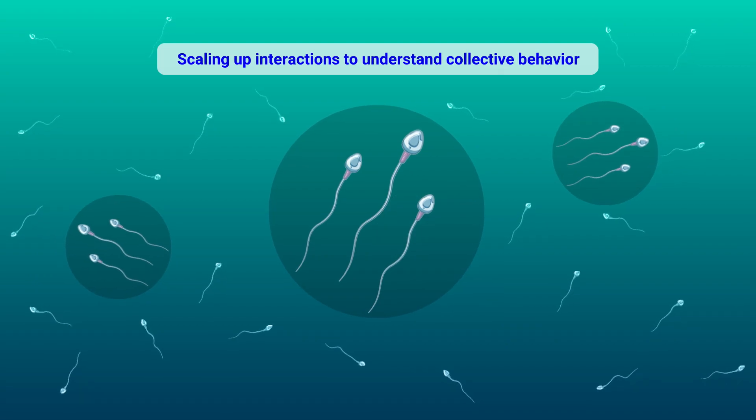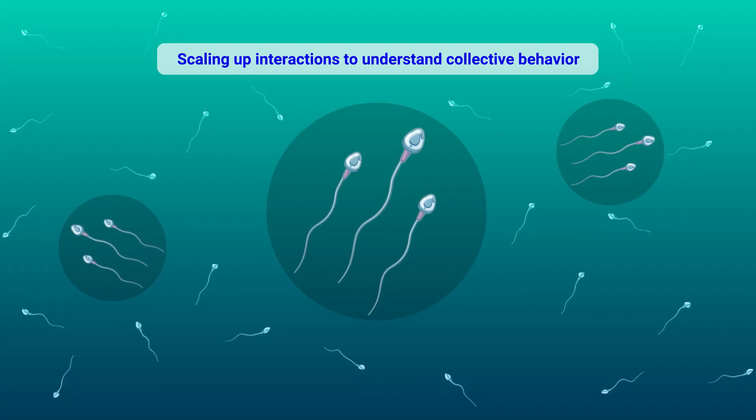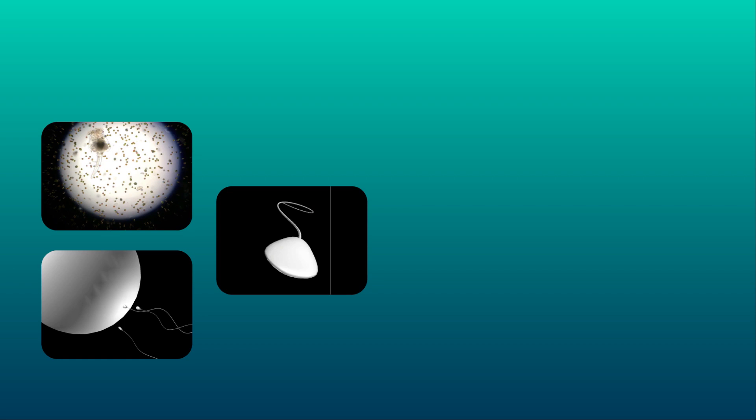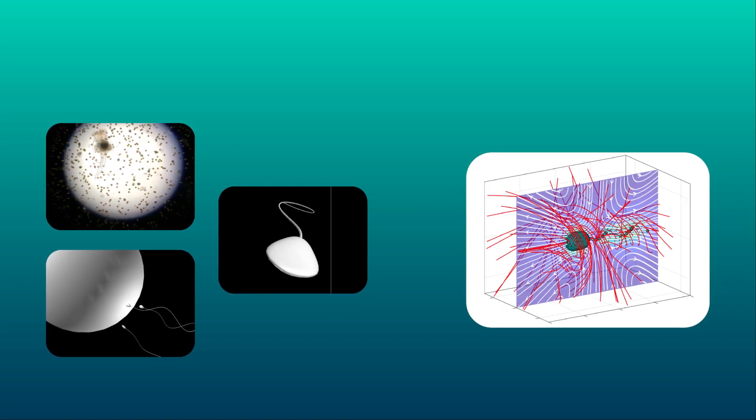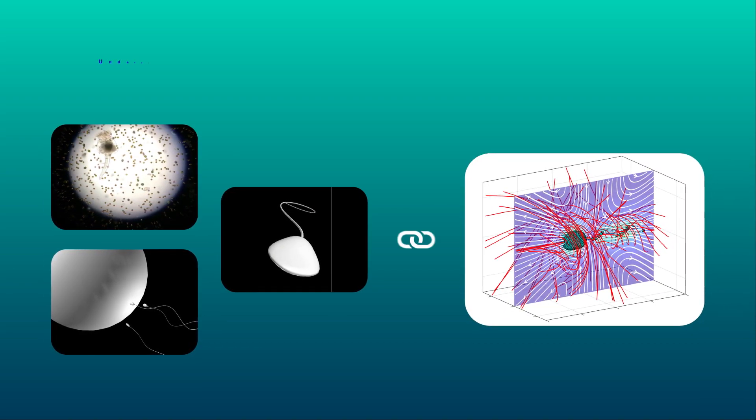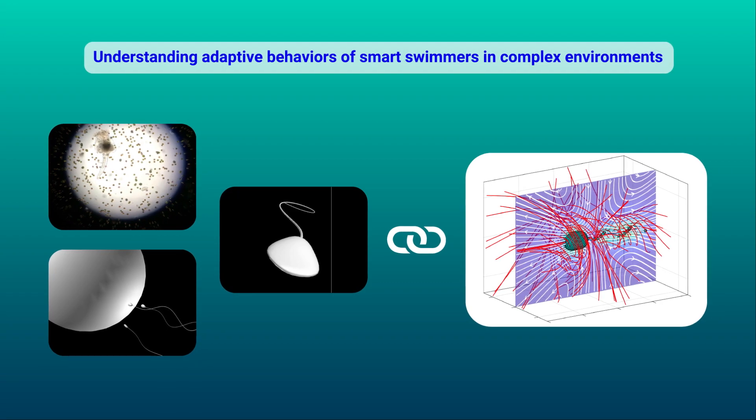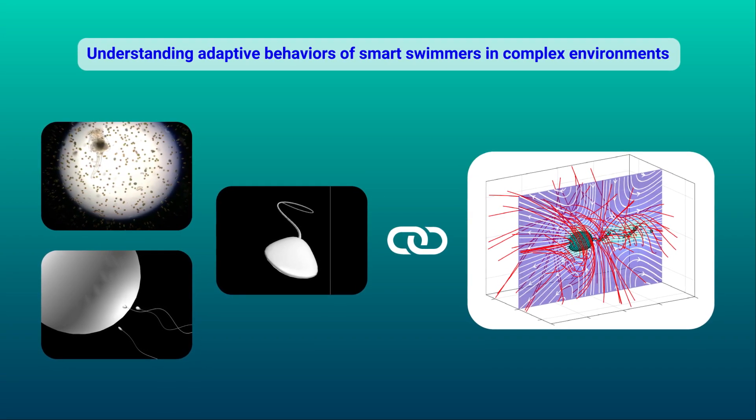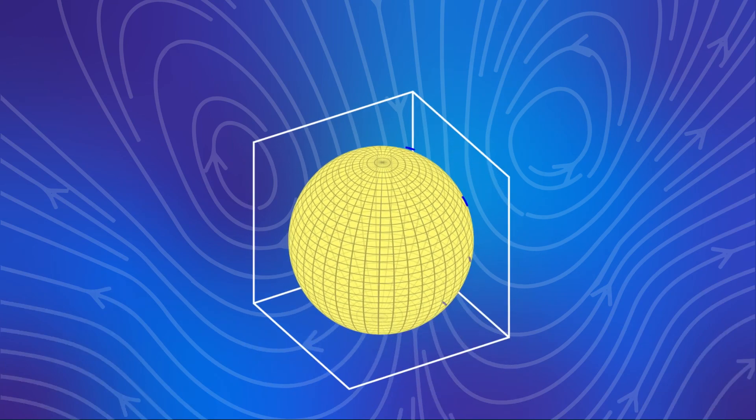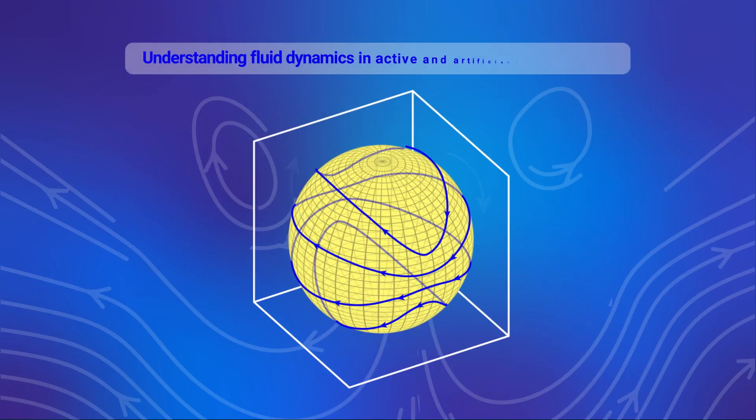Additionally, the review suggests a potential application of Jeffrey's equations in understanding the adaptive behaviors of smart swimmers in complex environments. In summary, the concepts presented in this review provide a comprehensive theoretical foundation of Jeffrey's orbits and their relation to micro swimmers.